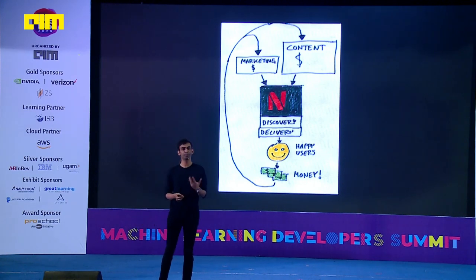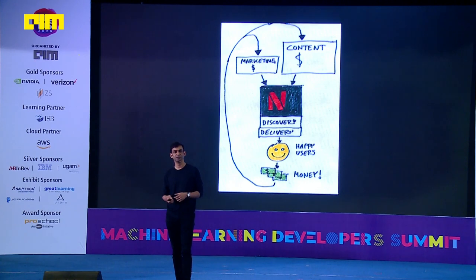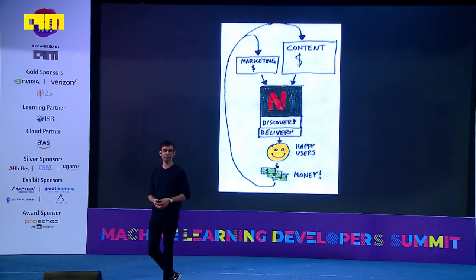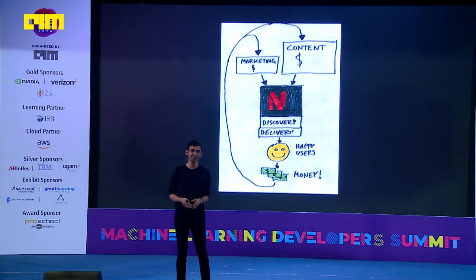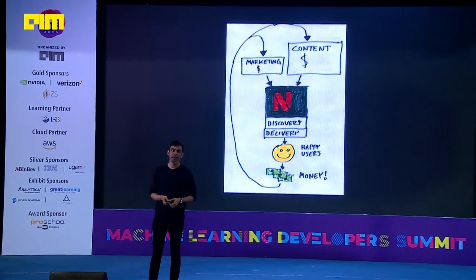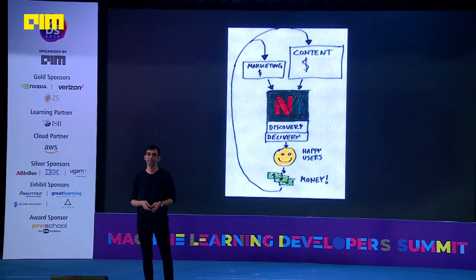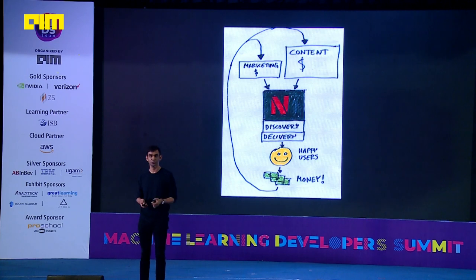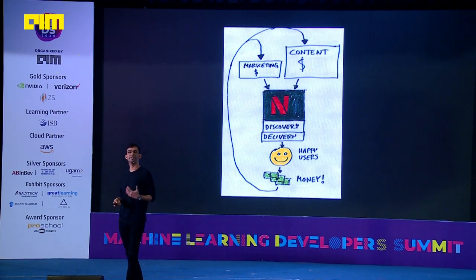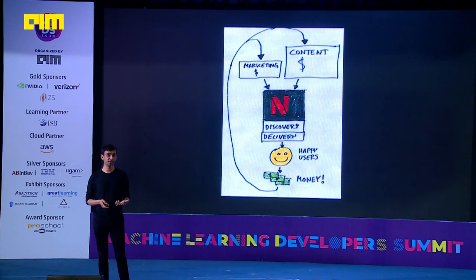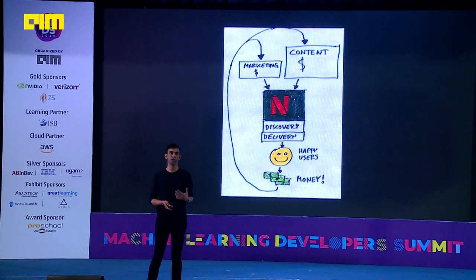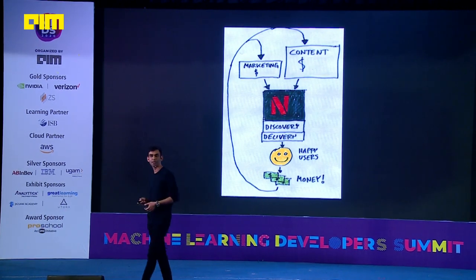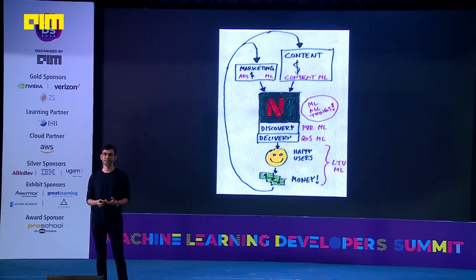If we are winning that moment of truth — if you find something that engages you — you'll continue to be our subscriber, continue paying us every single month. That pays for my bills, our marketing costs to attract new subscribers, and our library of content that we license, produce, or buy from other studios. This is a positive feedback cycle: keeping users happy means more money, which allows us to create better content, and this leads to a whole bunch of interesting data science problems.